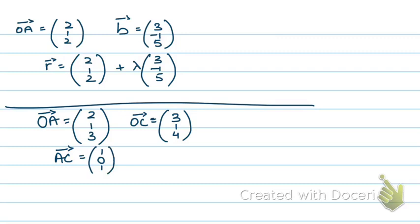Now if I write the equation of the line, this will look like R equals to either of the two points. Using OA: R = (2, 1, 3) + lambda (1, 0, 1). This becomes my vector equation of the line passing through OA and OC. Alternatively, I could use point OC: R = (3, 1, 4) + lambda (1, 0, 1). I could also change the signs of the direction vector to (-1, 0, -1) — it won't make a difference because it will be multiplied by a scalar multiple anyway.